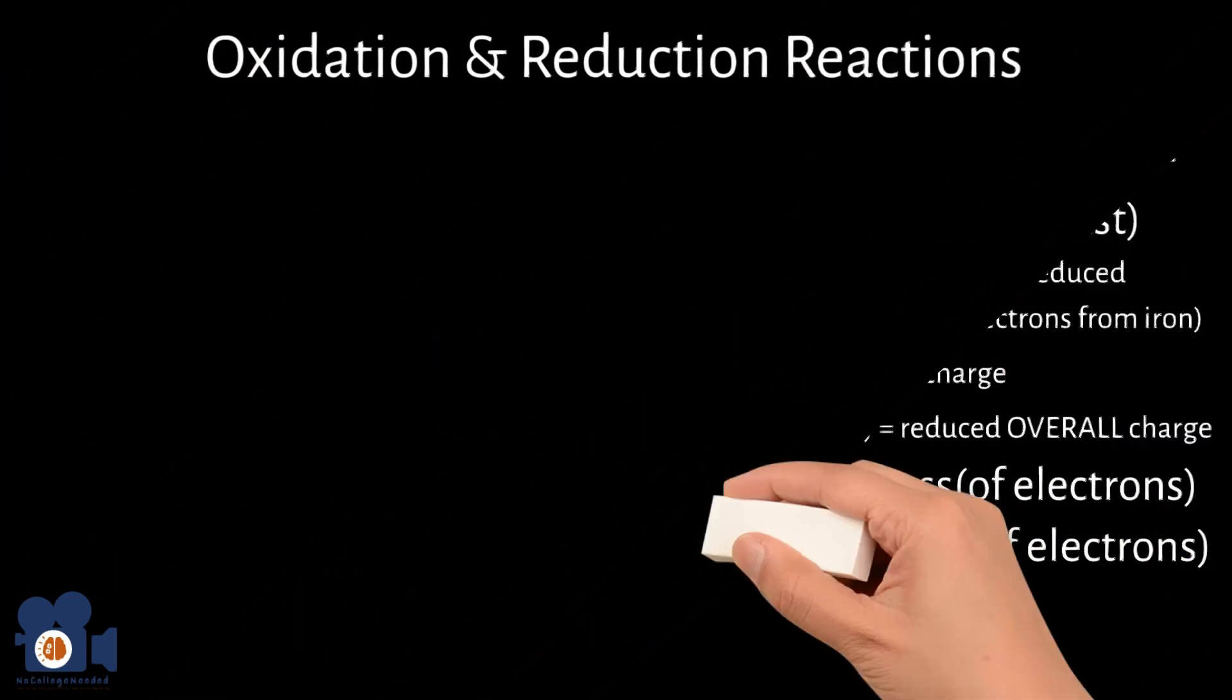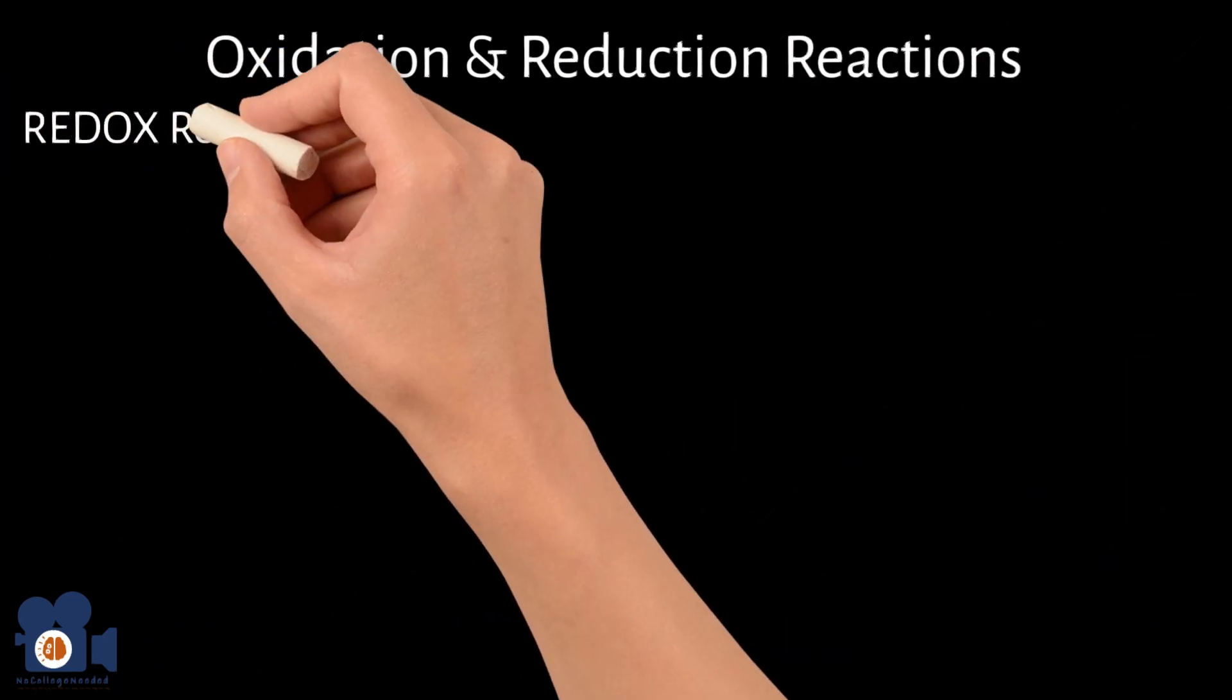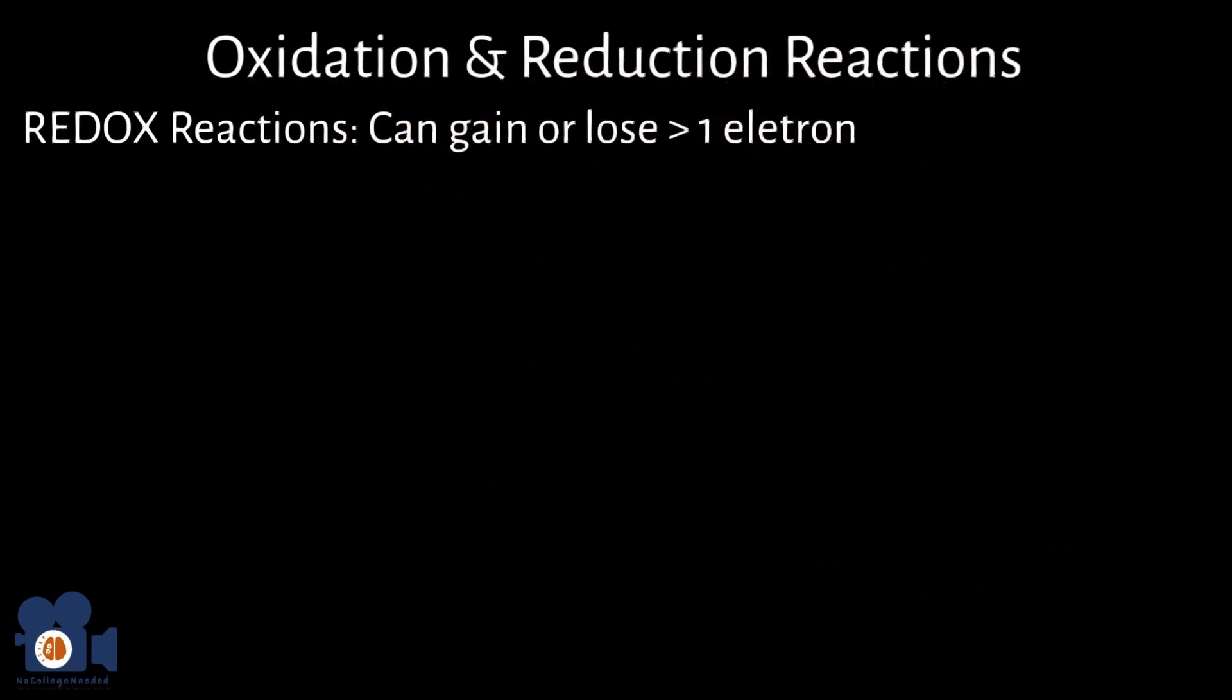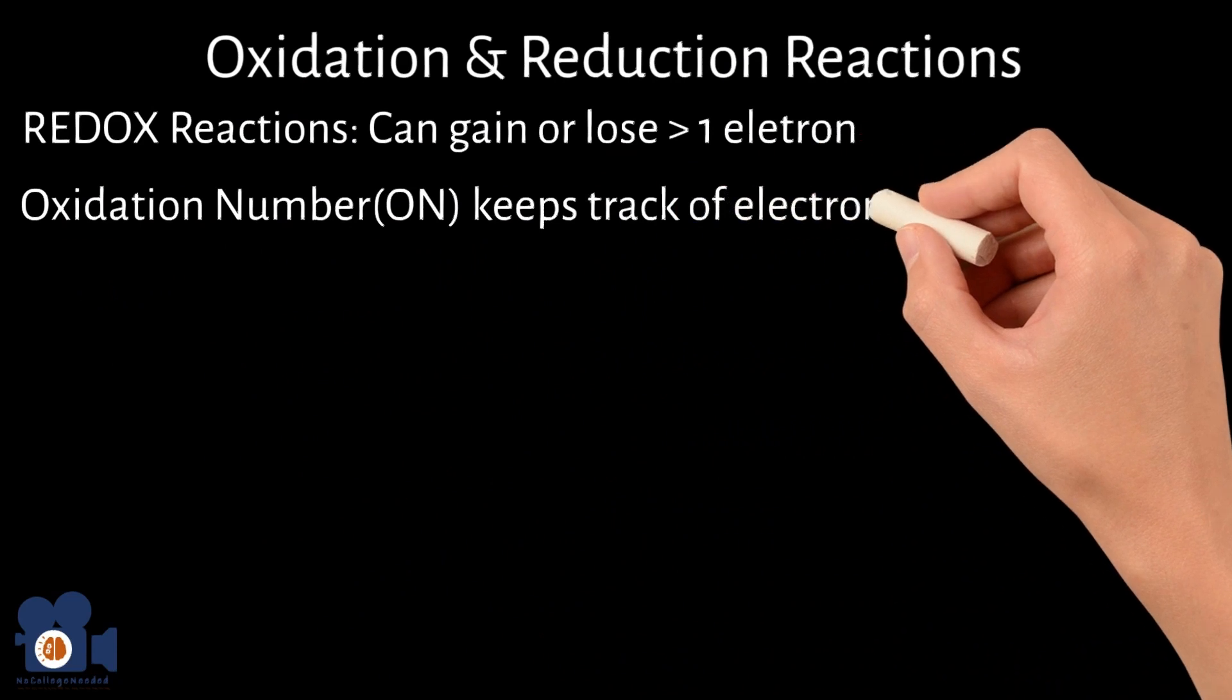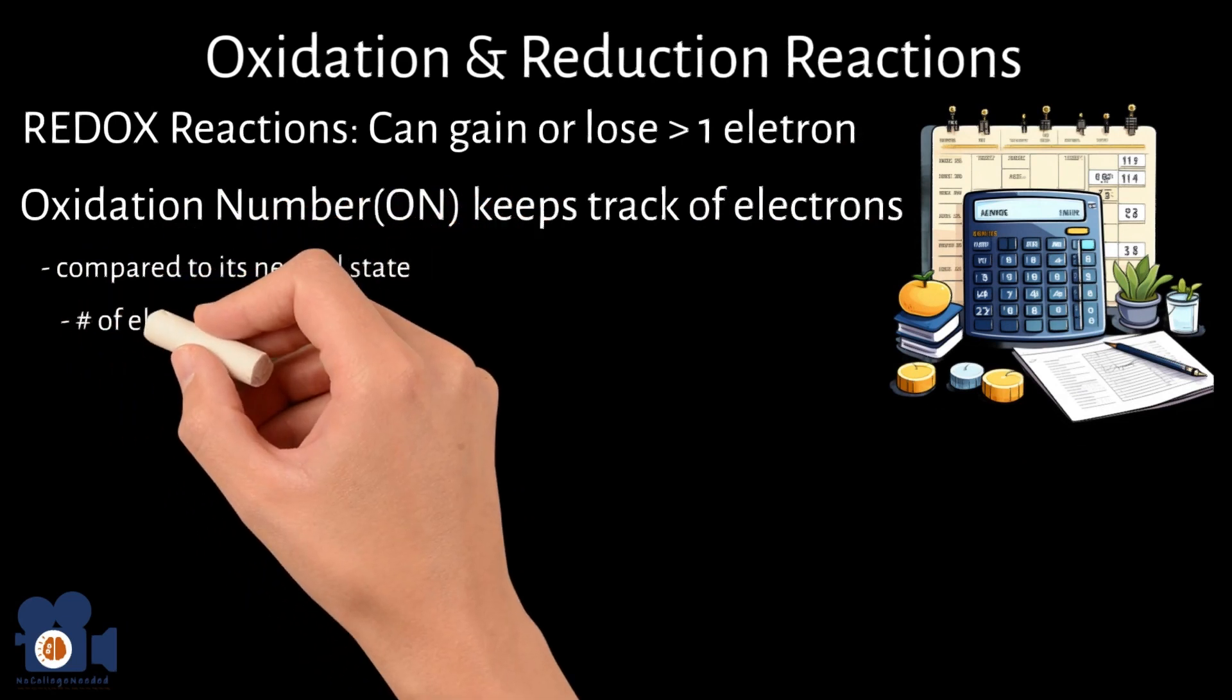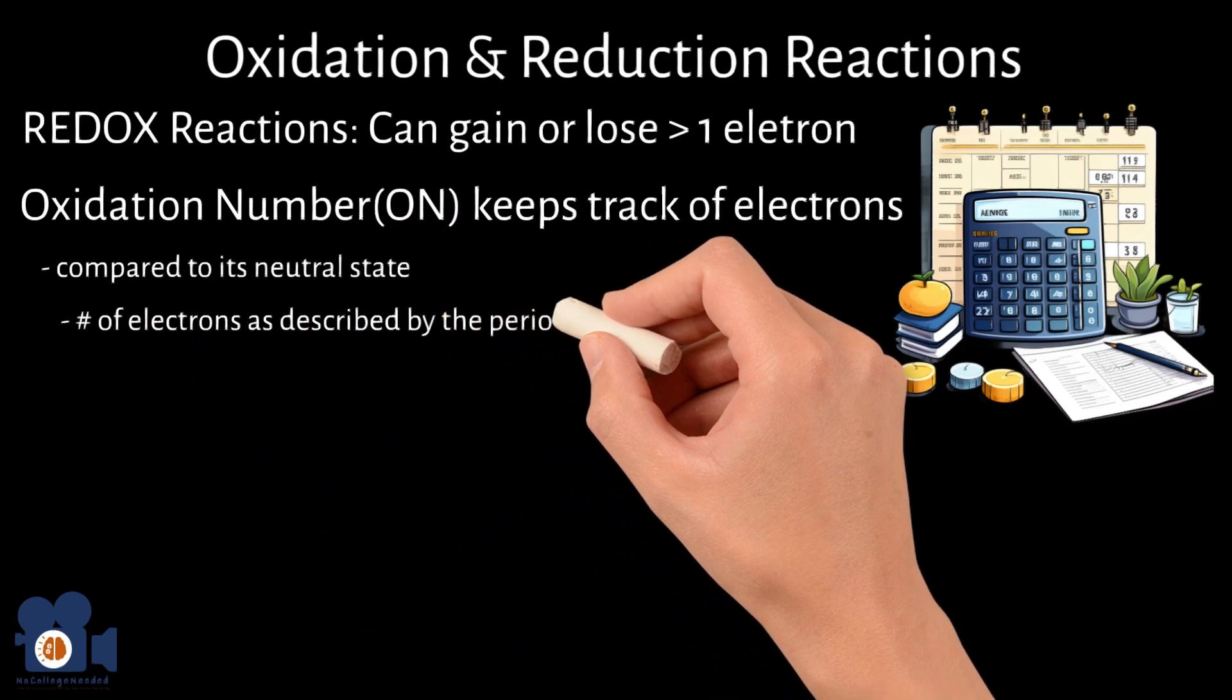Oftentimes, in redox reactions, chemicals can gain or lose more than one electron, so chemists came up with a concept called oxidation numbers to keep track. Oxidation numbers keep track of how many electrons an atom has gained or lost compared to its neutral state. By neutral state, we mean the same number of electrons as described by the periodic table.